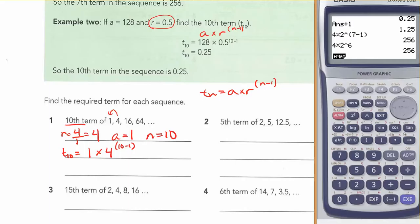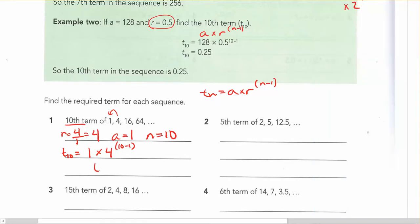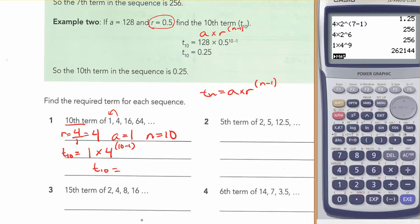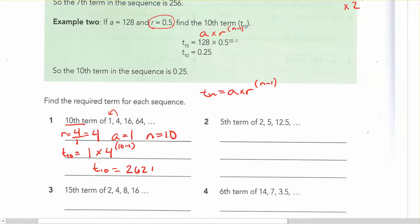So 1 times 4 to the power of 10 minus 1. And in your calculator, you can plug this in as 1 times 4 to the power of, for me, I just think 10 minus 1 is 9, makes it easier, you don't need the brackets. So the 10th term is a really big number. And there you go. So for each of these, thinking about what's the N value, I'm plugging it in.